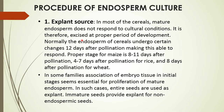In most cereals, mature endosperm does not respond to culture conditions and is therefore excised at a proper period of development. Endosperms of cereals undergo certain changes within 12 days after pollination. The proper stage is 8 to 11 days after pollination for maize, 4 to 7 days for rice, and 8 days for wheat. In some families, association of embryo tissue in initial stages is essential for proliferation of mature endosperm, so entire seeds are used as explants. Immature seeds provide explants for non-endospermic seeds.